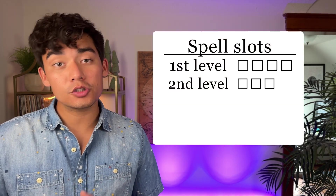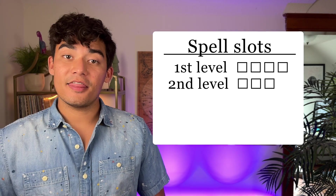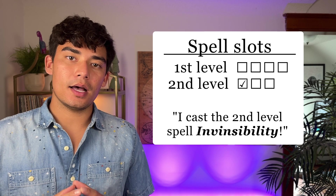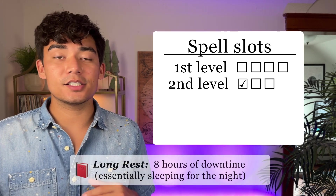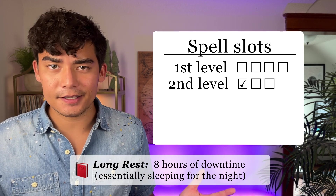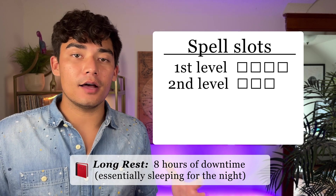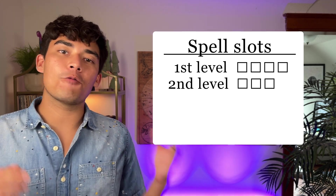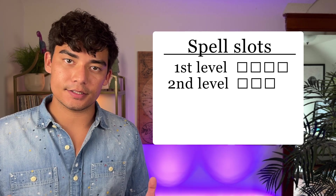Here is an example. A character has 4 first level spell slots and 3 second level spell slots. The character casts a second level spell. After they cast a spell, the character now only has 2 second level spell slots available. The character takes a long rest, which is basically going to bed for the night, which refreshes all of their spell slots.